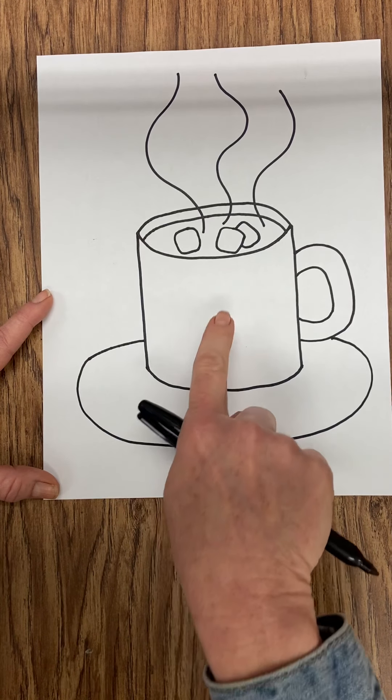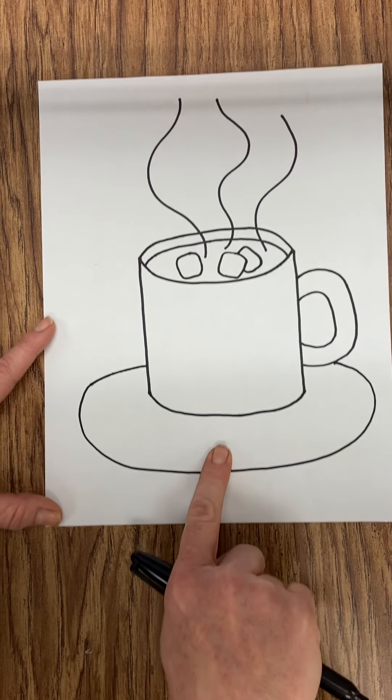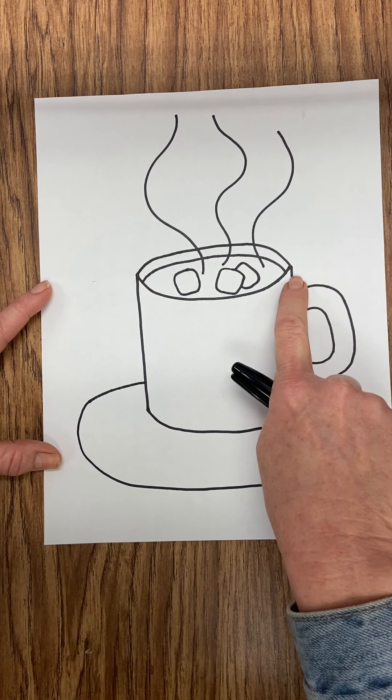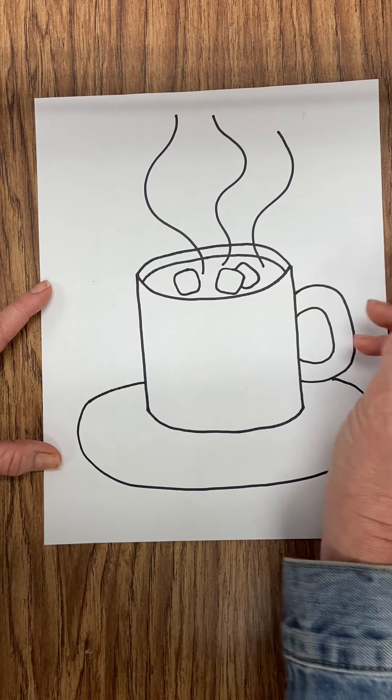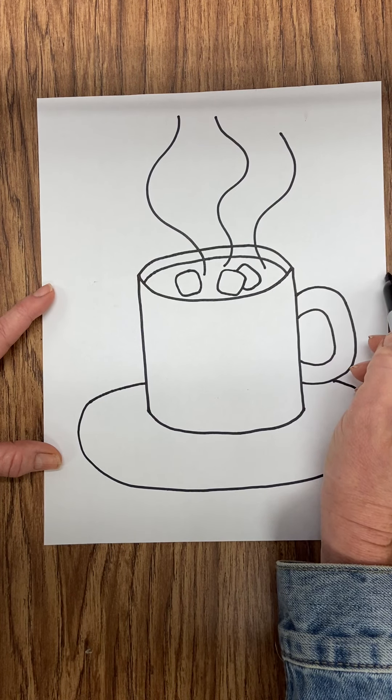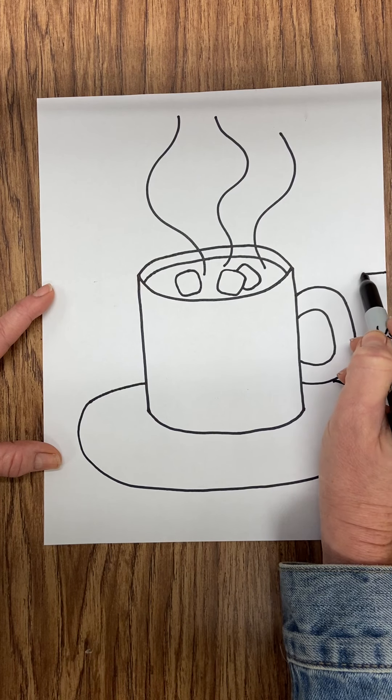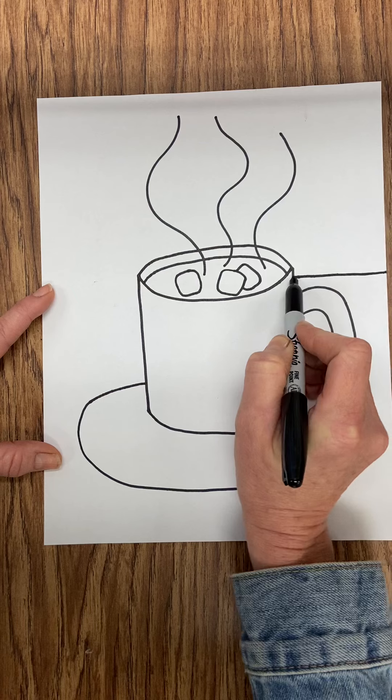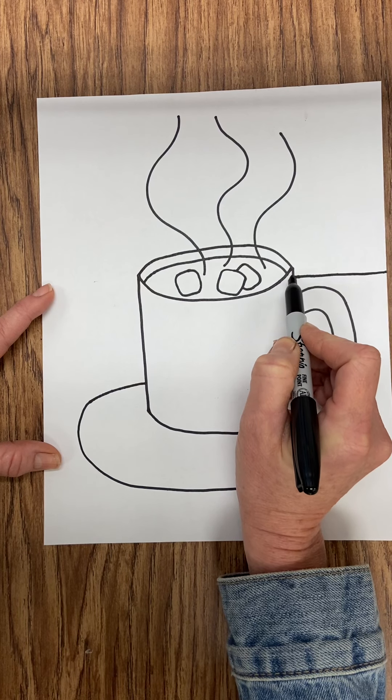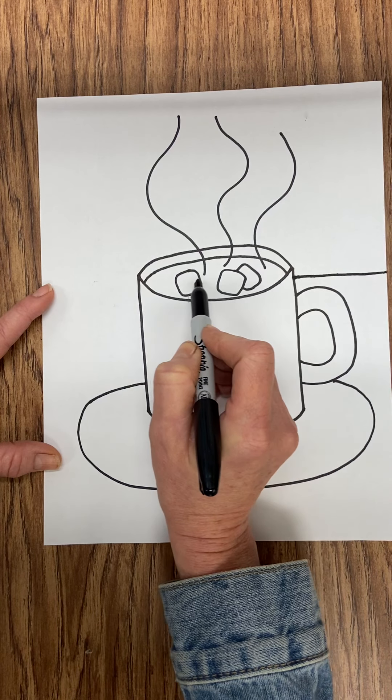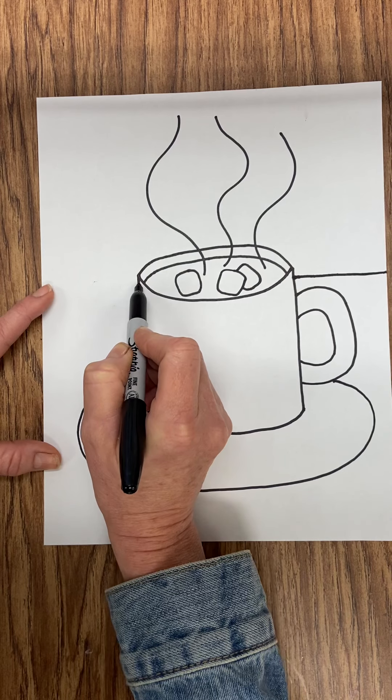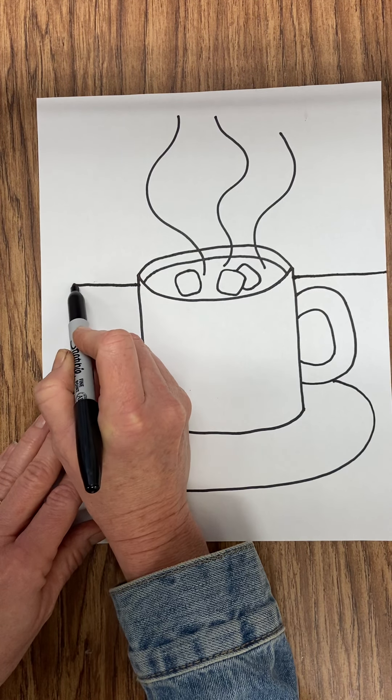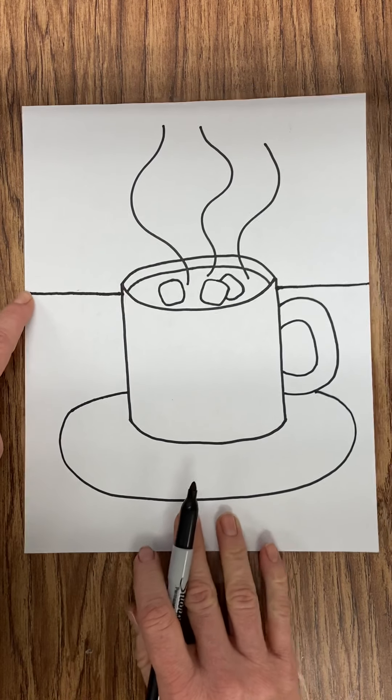So now I have my mug, my saucer, and now I need to add in my ground line. I'm going to make sure my ground line is above my handle. So I'm going to start actually on the side that the handle's on. And I'm going to draw my line over until I hit my mug. When I hit my mug, I have to pick up my marker and pretend draw across to the other side. Now that I'm on the other side of my mug, I can put my marker back down and finish my ground line to the side.